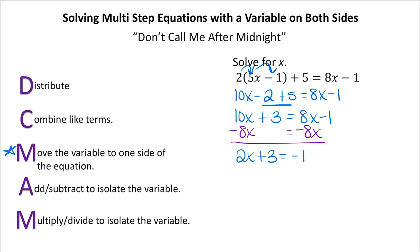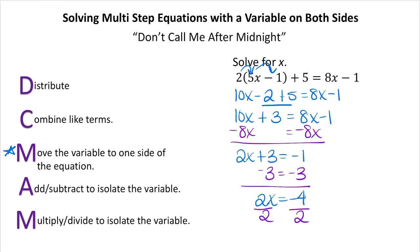Now I want to add or subtract to isolate the variable. I have a plus 3, so I'm going to undo that by subtracting 3 from both sides, which gives me 2x equals negative 4. Now I'm going to divide to isolate the variable — I have 2 times x, so I'll divide both sides by 2, giving me x equals negative 2. In this example, I happened to use every single step in the process.